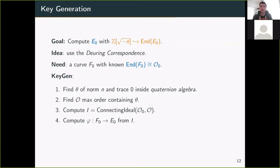So how do we find E₀? We'll use ideals. In particular, we compute a connecting ideal I between O₀, the special maximal order, and O, the order we just computed. Under the Deuring correspondence, this gives an isogeny from F₀ to E₀. If we can compute this isogeny, then the answer to our problem End(E₀) is the codomain of this isogeny.